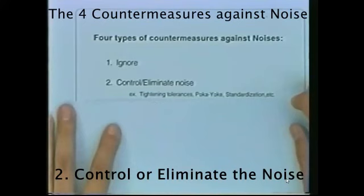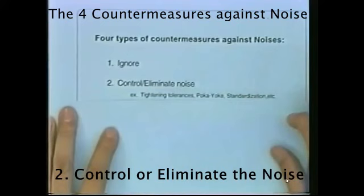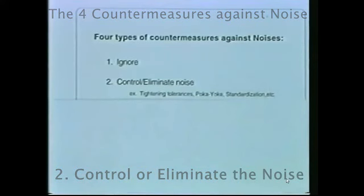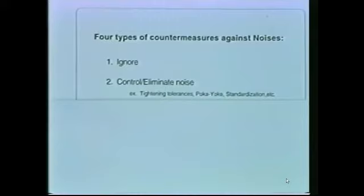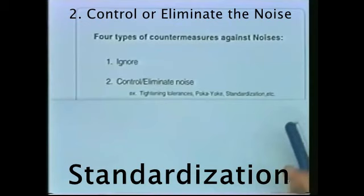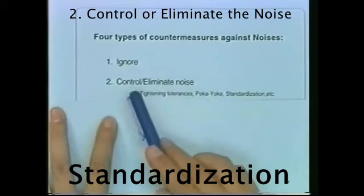The second type of countermeasure is to control or eliminate the noise itself. For example, tighten the tolerance. Poka-yoke — mistake-proofing — is a countermeasure. And standardization, like operating standards and operation procedure standards, also fall under controlling and eliminating the noise itself.